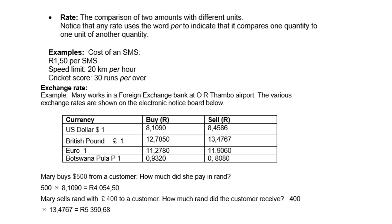Mary sells Rand worth 400 pounds to a customer. How much Rand did the customer receive? Here again we multiply, because the Rand is weaker than the pound. So it is 400 times the rate, which is 13.4767. Remember, she is selling. So it is 5,390 Rand and 68 cents.